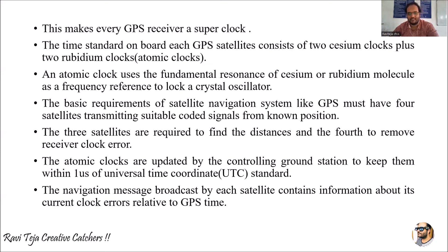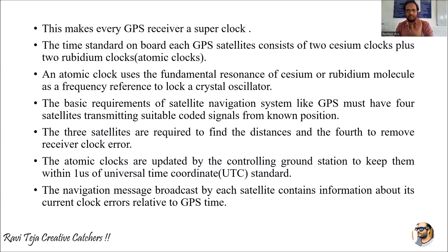These atomic clocks are updated by the controlling ground station to keep them within one microsecond of Universal Time Coordinate, which we call UTC. The GPS atomic clocks follow UTC time standards. The navigation message broadcast by each satellite contains information about its current clock errors with respect to GPS time.